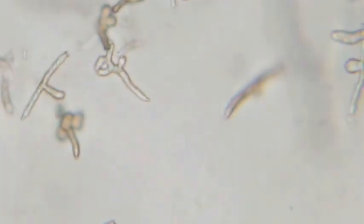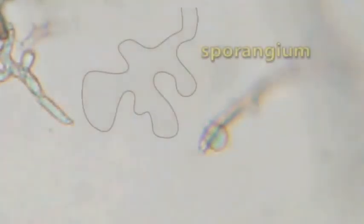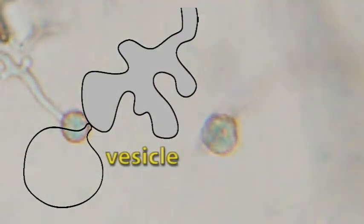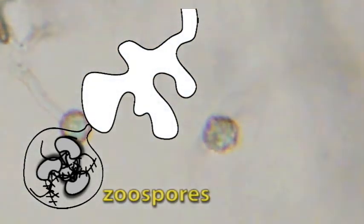Sporangia are a stage in the asexual development in Pythium. Sporangia produce spherical vesicles. Cytoplasm from the sporangia streams into the vesicle where it cleaves into kidney-shaped zoospores. When the zoospores are fully formed, the vesicle breaks and the zoospores are released.